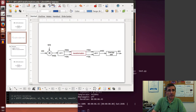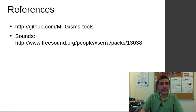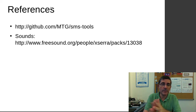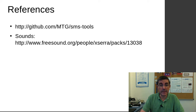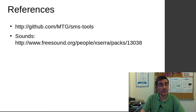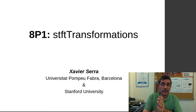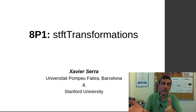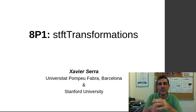That's all for this lecture. We've seen how within the SMS tools there is code for morphing between two sounds using the short-time Fourier transform. The code is quite simple — perhaps the simplest type of spectral transformation — yet can be quite useful for various applications. In the next programming lecture, we will talk about the sinusoidal model and how to implement transformations using the same SMS tools.